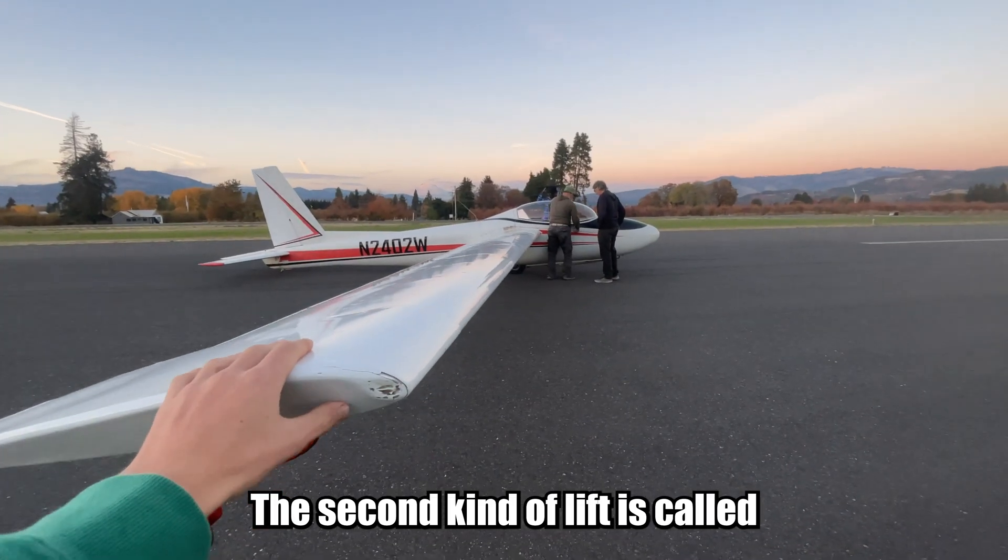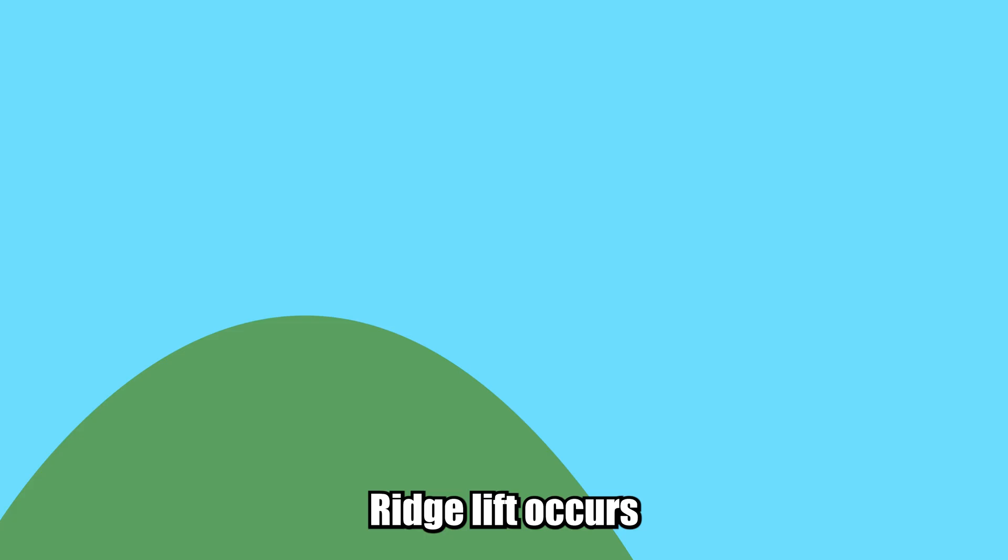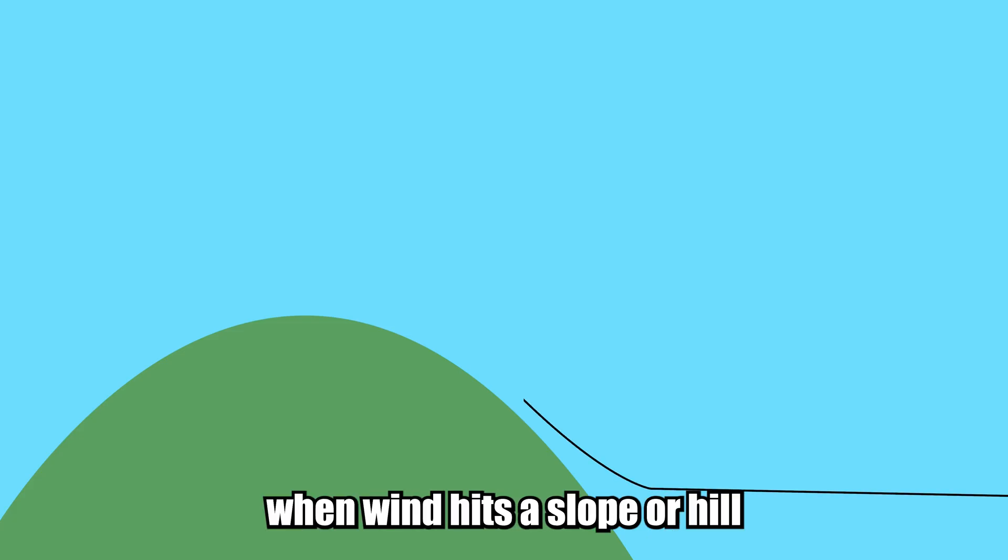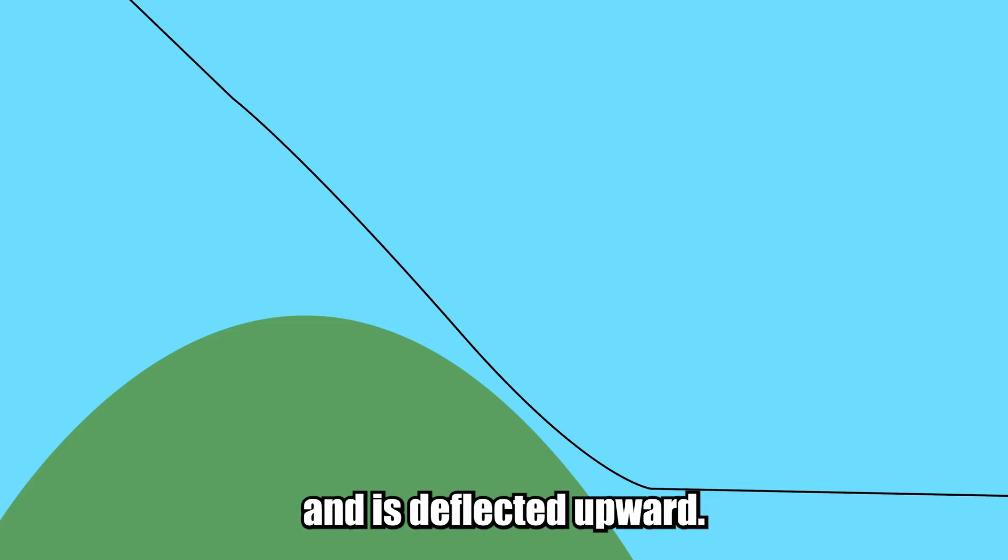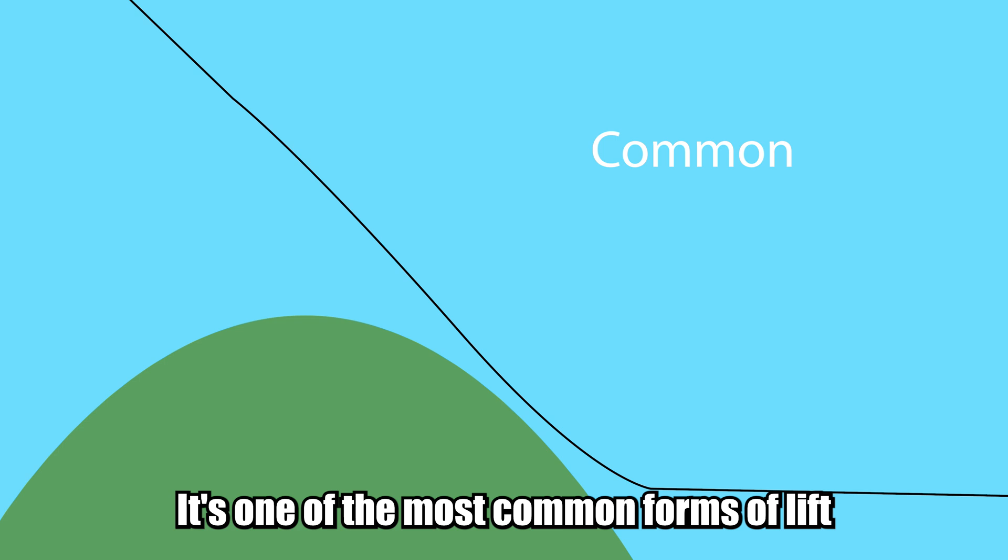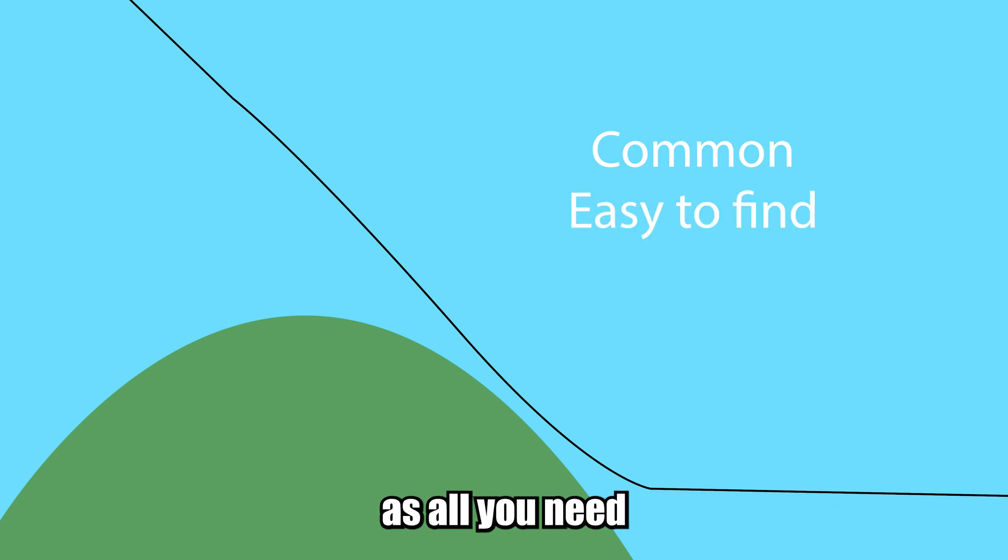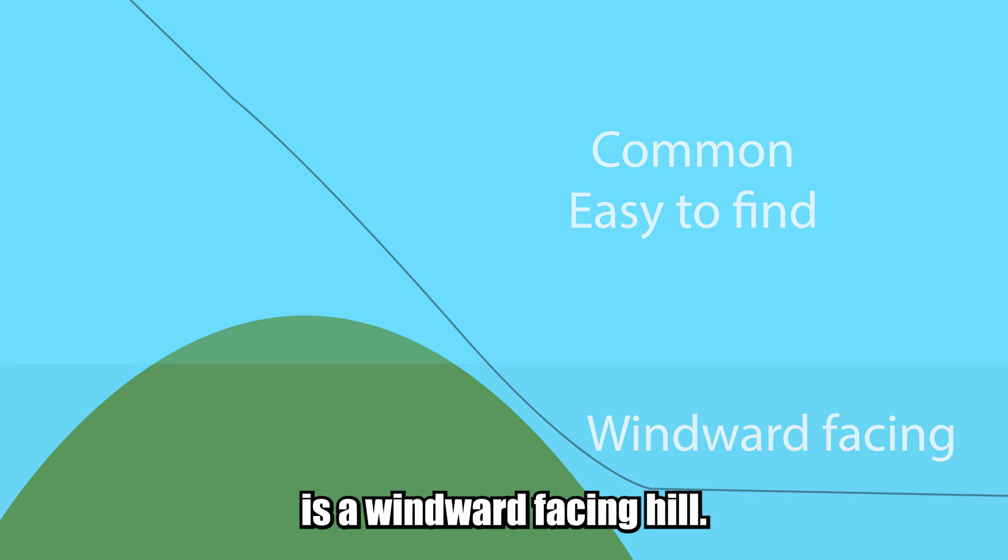The second kind of lift is called ridge lift. Ridge lift occurs when wind hits a slope or hill and is deflected upward. It's one of the most common forms of lift and is probably the easiest to find, as all you need is a windward-facing hill.